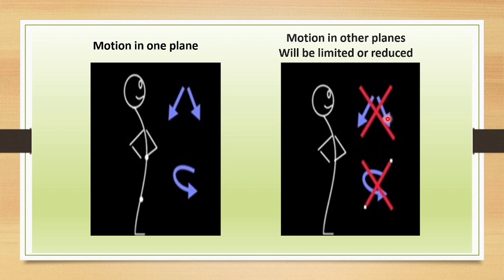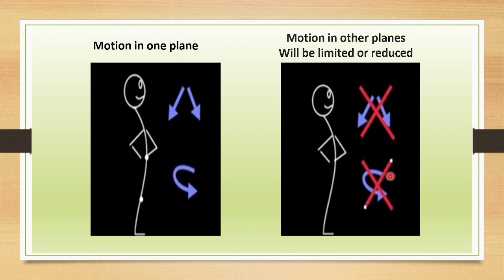The Third Law states that when motion is introduced in one plane, it will either modify or reduce motion in the other two planes. The third principle sums up the other two laws by stating that dysfunction in one plane negatively affects all other planes of motion. For example, if a person is having issues during extension, their lateral flexion, flexion, and rotation will also be affected. Motion in one plane affecting the other two planes — this is how Nelson explained the Third Law.